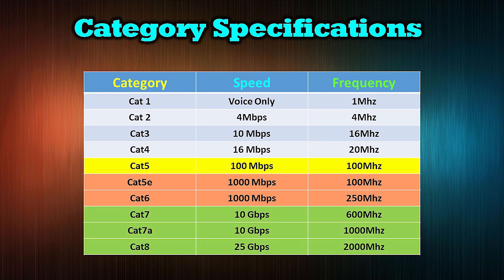If your needs include the distribution of ultra high definition 4K video or above, Cat7, Cat7a, or Cat8 cabling is the perfect choice. Not only do these cables support the fastest data transfer and largest bandwidth, but they are also perfectly suited for advanced functionality such as power over cable and video distribution. Using any of these higher category cables will ensure that your networks are ready to handle the increased demands of future technology.